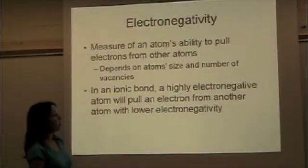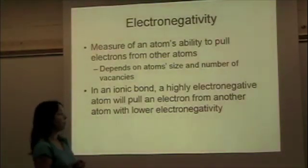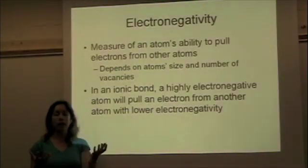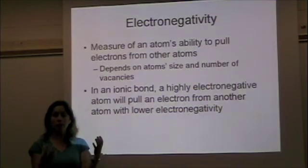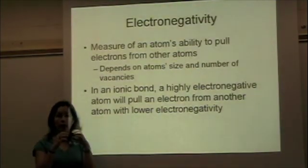In an ionic bond, this usually forms between a highly electronegative atom, which is going to pull an electron from another atom that is lower in electronegativity. We're going to form a cation and an anion, and those two oppositely charged ions are going to be attracted to each other, forming an ionic bond.